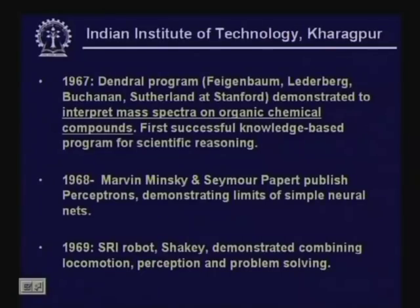Before that, people felt that AI would soon produce an extremely intelligent computer. But the limitations of computational power were discovered when computational complexity was understood. In 1967, Feigenbaum and others developed the DENDRAL program, which demonstrated and interpreted mass spectra on organic chemical compounds. In 1968, a significant paper by Minsky and Papert demonstrated the limits of simple neural nets, which had a tremendous negative effect in discouraging the field of neural networks for the time being. Later, people realized there are ways of overcoming this problem.